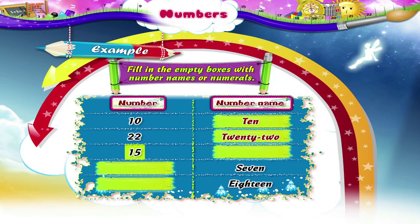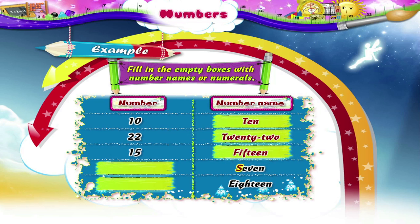What about 15, Starry? Yes, it is written as F-I-F-T-E-E-N. Look here — the number is given in words. It is S-E-V-E-N, that is 7.